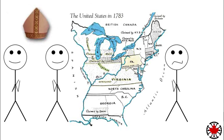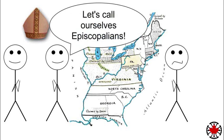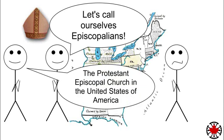Those Americans who still had the core tenets and beliefs of the Church of England, and wanted to contrast themselves with the other Protestants in their country, had to find a name for themselves that didn't imply a connection to the nation they had just fought and won independence from. In short, they took a page from the Scots and named their church the Protestant Episcopal Church in the United States of America.